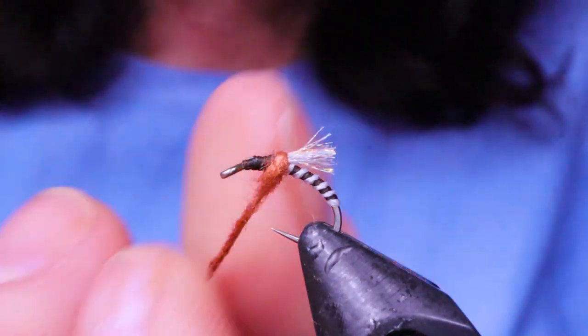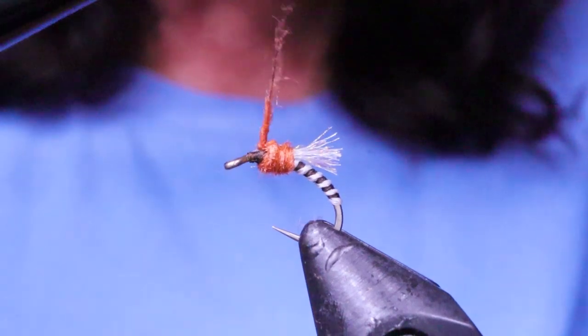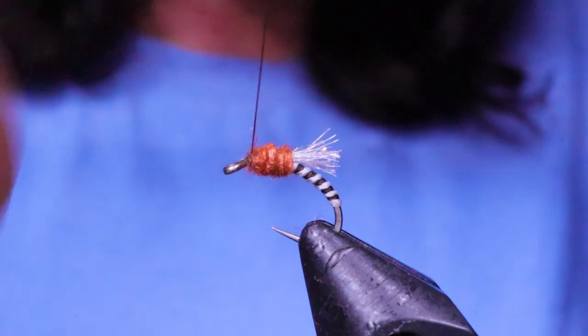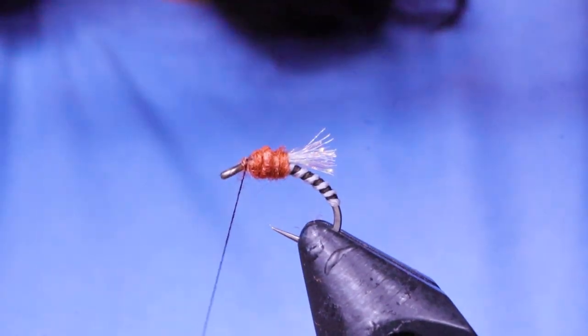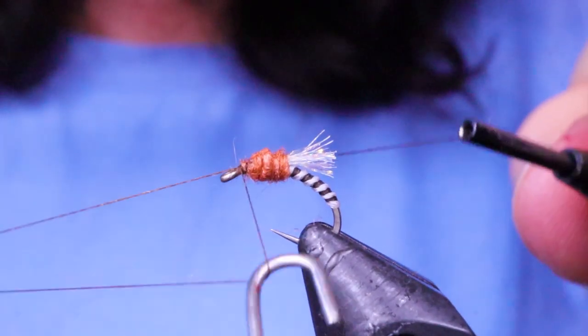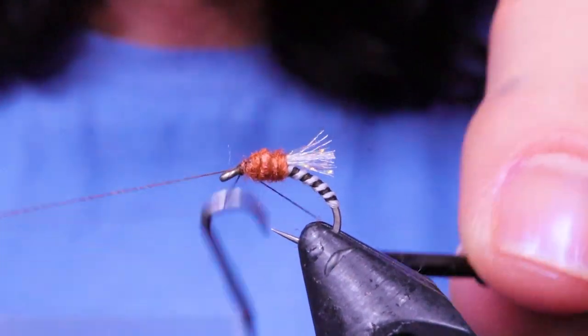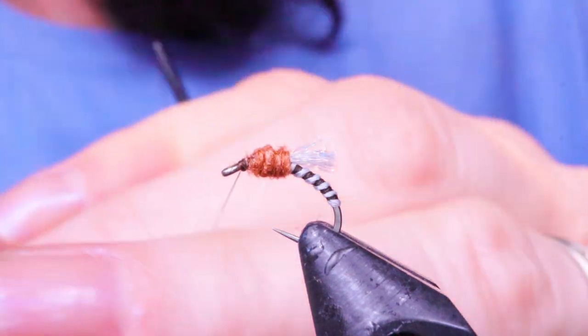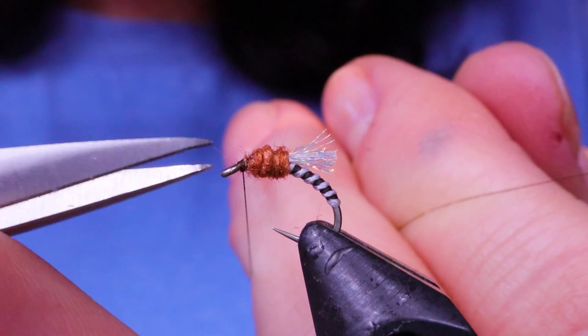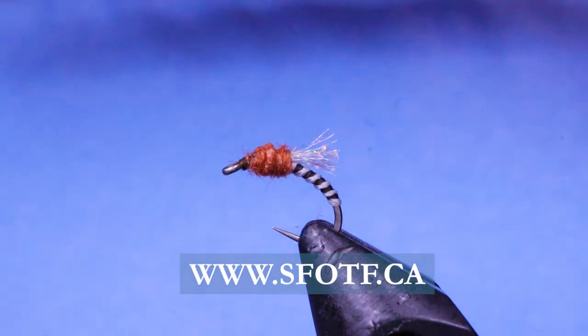You can just wrap that on there. That's good. And then whip finish. Give it a couple. Go ahead and snip away your thread.